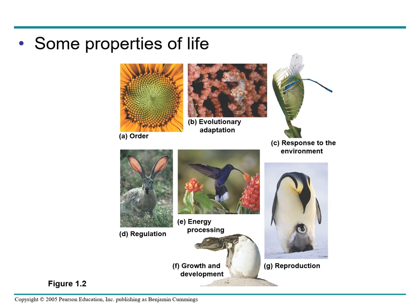Then we have the energy processing property of life. Here you can see a bird which obtains fuel in the form of nectar from the flower. The bird will use chemical energy stored in its food to power flight and other work. Next property is growth and development. Inherited information carried by genes controls the pattern of growth and development of organisms such as an oak seedling or a crocodile baby. The last property of life is reproduction, where organisms reproduce their own kind, as seen with the penguin and its baby. So the seven properties of life are: order, evolutionary adaptation, response to environment, regulation, energy processing, growth and development, and reproduction.